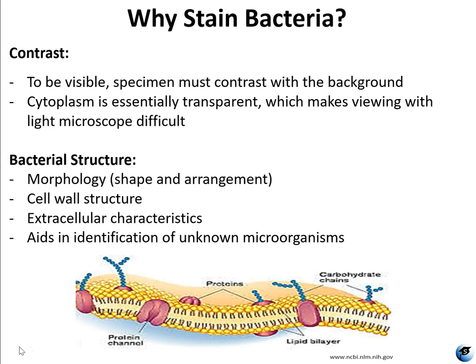So why stain bacteria? In lab 3 you may have had trouble viewing some of the pond water microbes, or especially the yeast cells. One reason for that trouble was that these specimens didn't have enough contrast compared to their backgrounds. The cytoplasm of these cells is essentially transparent, which makes viewing with a light microscope difficult. We want to clearly see our microbial specimens so we can observe their cellular morphology — shape and arrangement — cell wall structure, and some extracellular characteristics such as mycolic acids. Being able to clearly see these things microscopically also aids in identification of unknown microbes.